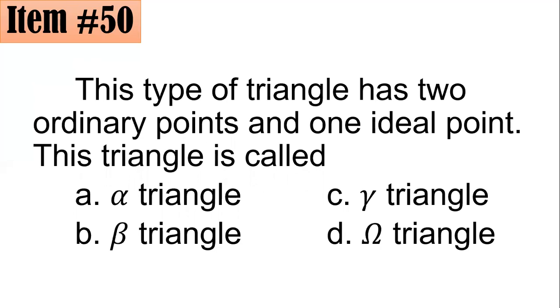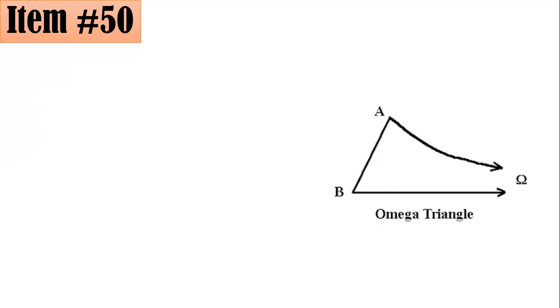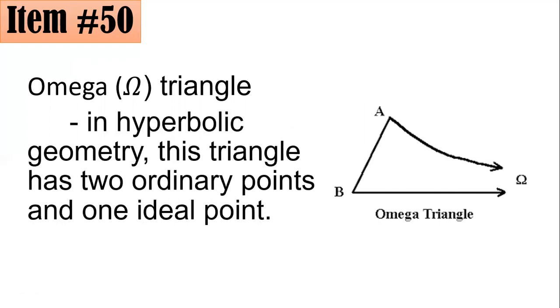Item 50. This type of triangle has two ordinary points and one ideal point. This triangle is called alpha triangle, beta triangle, gamma triangle, or omega triangle. If you are studying hyperbolic geometry, you could actually know that this is the definition of what we call omega triangle. An omega triangle has two ordinary points. In this case, we have A and B. But if you have this line, for example, you will form a triangle, but it's like, quote unquote, they will intersect to infinity, quote unquote. That's why this is what you call your ideal point, your omega point. Letter D is the correct answer here.